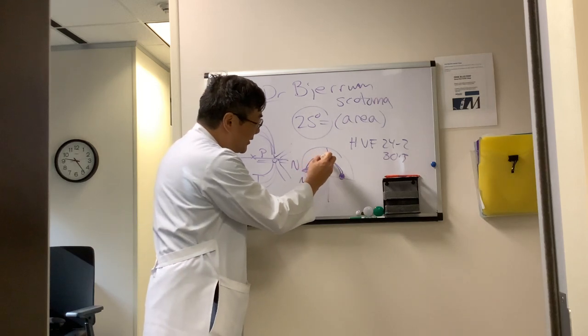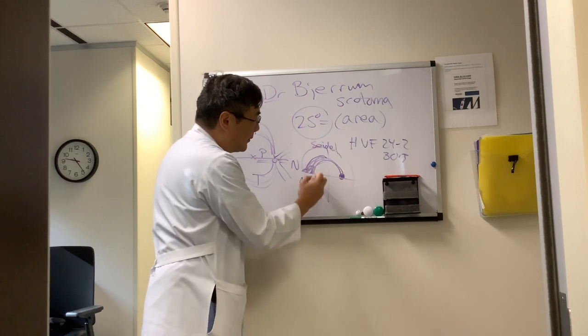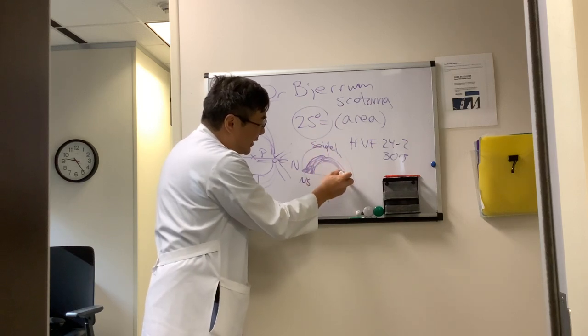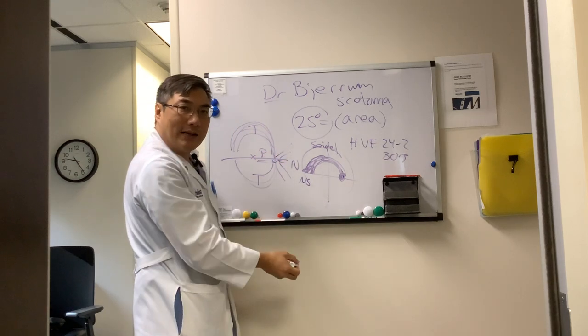As the field progresses, it gets denser and denser, and that's called a Seidel scotoma. Then finally, it reaches and touches the blind spot because the nerve fiber layer touches the optic nerve, which is the blind spot.